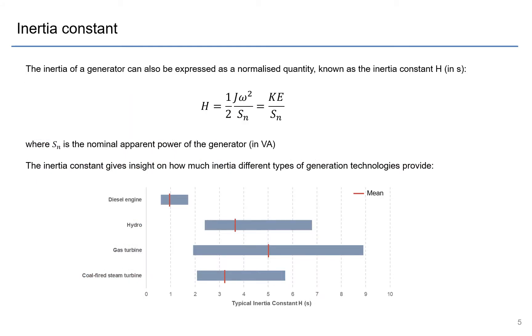We previously described the inertia of a generator as kinetic energy in terms of joules or megawatt seconds, but we can also normalize this inertia by getting the kinetic energy and dividing by its nominal apparent power of that generating unit. This is known as the inertia constant H. Inertia constant is useful to give an insight on how different generation technologies provide different levels of inertia.